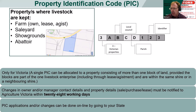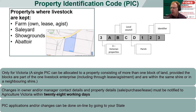In Victoria you can also have a PIC for a number of horticulture crops, particularly things like chestnuts and vineyards. You'll have a PIC as well if you own one or more hives. Basically, a PIC is allocated to a property consisting of more than one block of land.